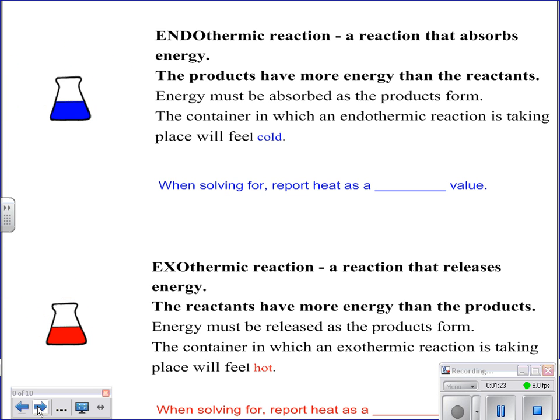Starting with endothermic, energy is entering. So because it's entering, we're going to have products that have more energy than what we started with. That means the beaker or flask that we touch is going to feel cold. The way you illustrate this is that your delta H, your heat that you're solving for, is always going to be a positive value when you have an endothermic reaction.